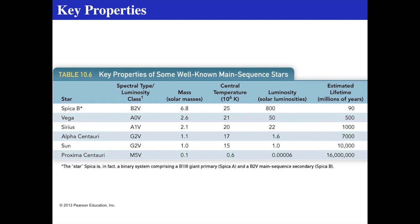Vega, one of the brightest stars in the summer sky, is about 50 times the luminosity of the Sun and only about two and a half to three times the mass of the Sun. There's not much mass difference between Spica B and Vega — roughly two times — yet the lifespan is about six times longer for Vega, and the luminosity is less than 10 times less. A small change in mass leads to a large change in luminosity and a huge change in lifespan.